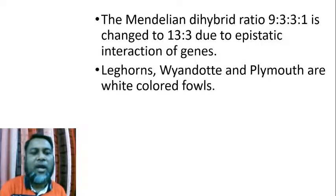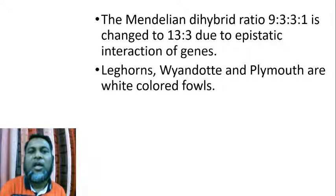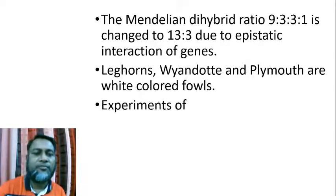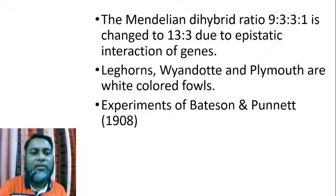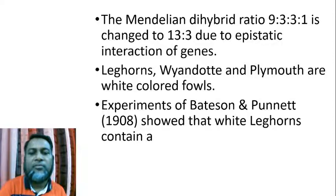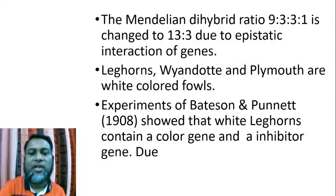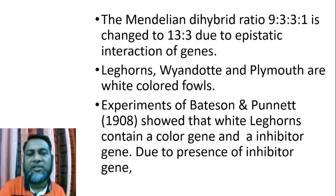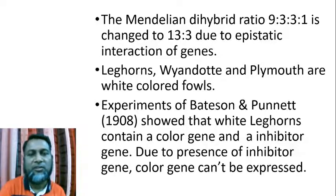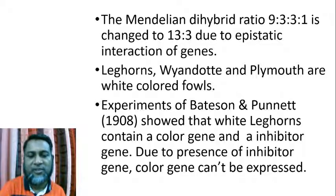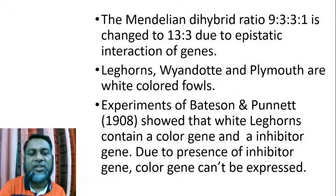Now I give an example. For example, Leghorns, Wyandotte, and Plymouth are white-colored fowls. Experiments of Bateson and Pernet showed that white Leghorns contain a color gene and an inhibitor gene. The inhibitor gene is the epistatic gene. Due to the presence of the inhibitor gene, the color gene cannot be expressed. So the inhibitor gene is the epistatic gene and the colored gene is the hypostatic gene.